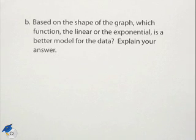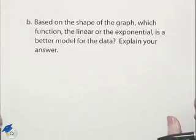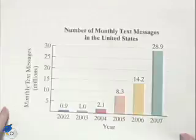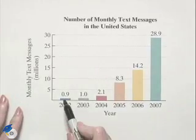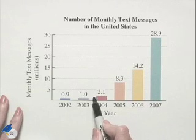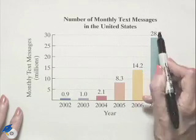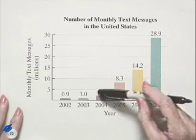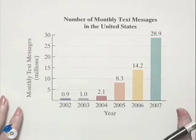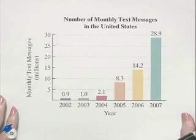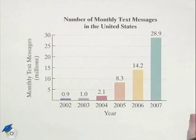Based on the shape of the graph, which function — the linear or the exponential — is a better model for the data? Looking back at the shape, we notice that it doesn't increase very rapidly at first, and then all of a sudden we see what is typically described as exponential growth. This certainly does not look linear, so the exponential model would be better.